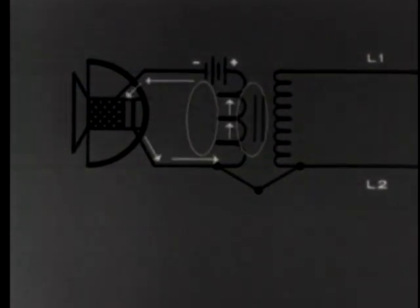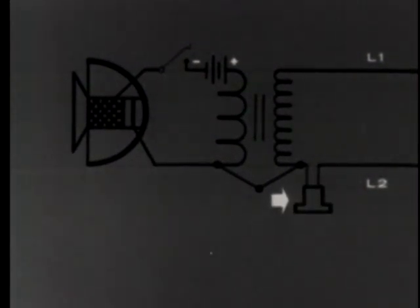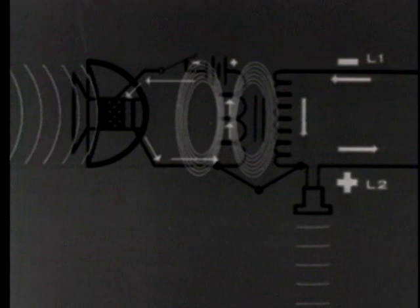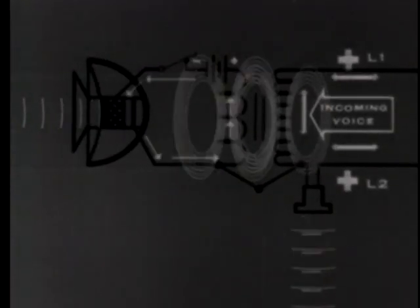Since our power will continue to drain even when we are not talking, our battery life can be prolonged by inserting a press-to-talk switch in the transmitter circuit. By adding a receiver, we are ready to talk, alternately receiving or sending. We can hear ourselves in our own receiver through an effect known as side tone. If we listen with our press-to-talk switch closed, the incoming voice will be interfered with by background noises coming from our own transmitter.